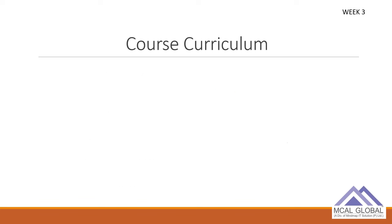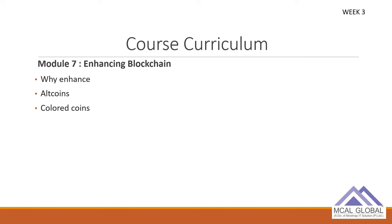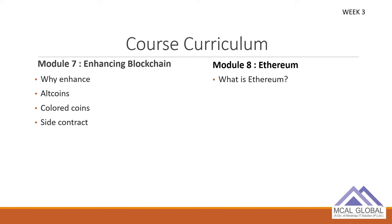We'll look at the latest trends in other cryptocurrencies, then the problems that led to the need to enhance the current blockchain — why forks emerged, why forks happened in the existing Bitcoin blockchain. We'll also see what smart contracts are.